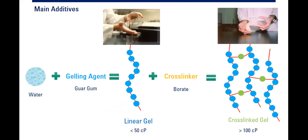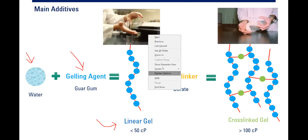How can we make high-viscosity fluid, or what we call fracturing gel? You provide water and add a gelling agent. Most commercial fluids now use guar gum as the gelling agent. Water plus the gelling agent gives us linear gel — a linear polymer. It is quite viscous, but not viscous enough to transport the proppant.